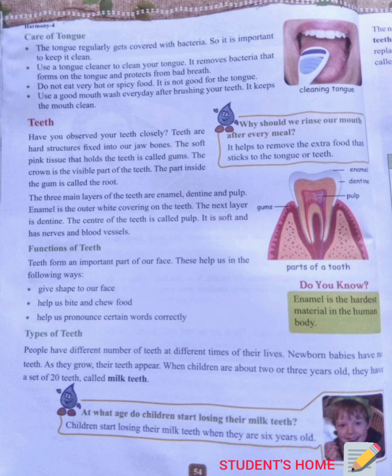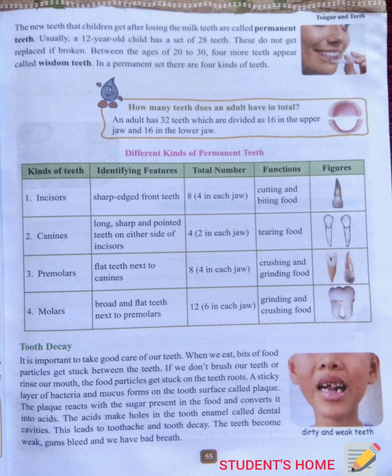Types of teeth: pupils have different numbers of teeth at different times of their lives. Newborn babies have no teeth. As they grow, their teeth appear. When children are about 2 or 3 years old, they have a set of 20 teeth called milk teeth. The new teeth that children get after losing the milk teeth are called permanent teeth. Usually, a 12-year-old child has a set of 28 teeth, and these do not get replaced if broken.